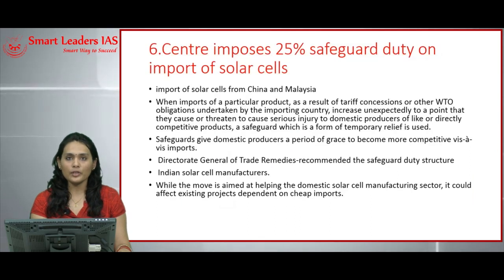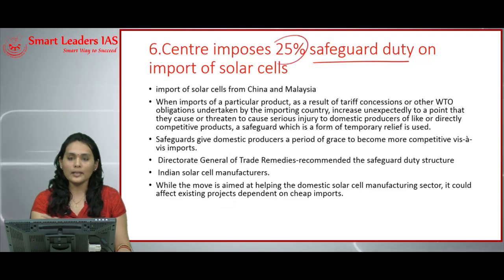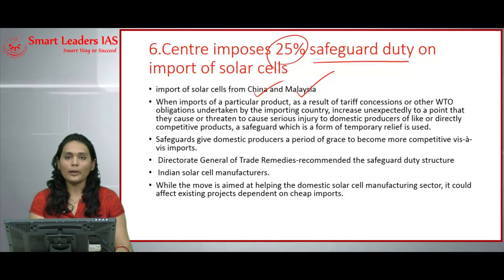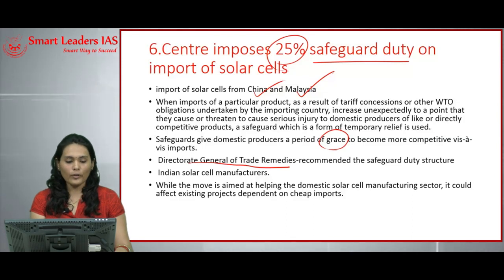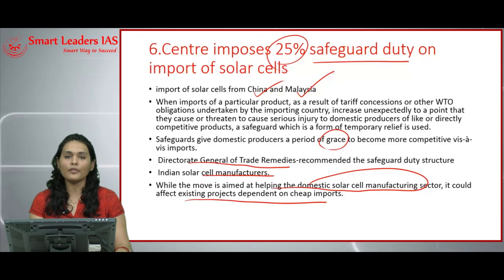The last article deals with the safeguard duty imposed on solar cells. The Indian government has imposed a 25% safeguard duty on solar cells imported from China and Malaysia. A safeguard duty is imposed when there is a sudden rise in imports that may affect the competitiveness of domestic industry. It is imposed only for a certain period of time, giving a grace period to domestic producers to adjust to market trends. The duty is imposed by the Director General of Trade Remedies based on applications from Indian solar cell manufacturers. While this may help the Indian domestic solar cell manufacturing sector, it may also affect existing projects that depend on cheaper solar cell imports from China and Malaysia.